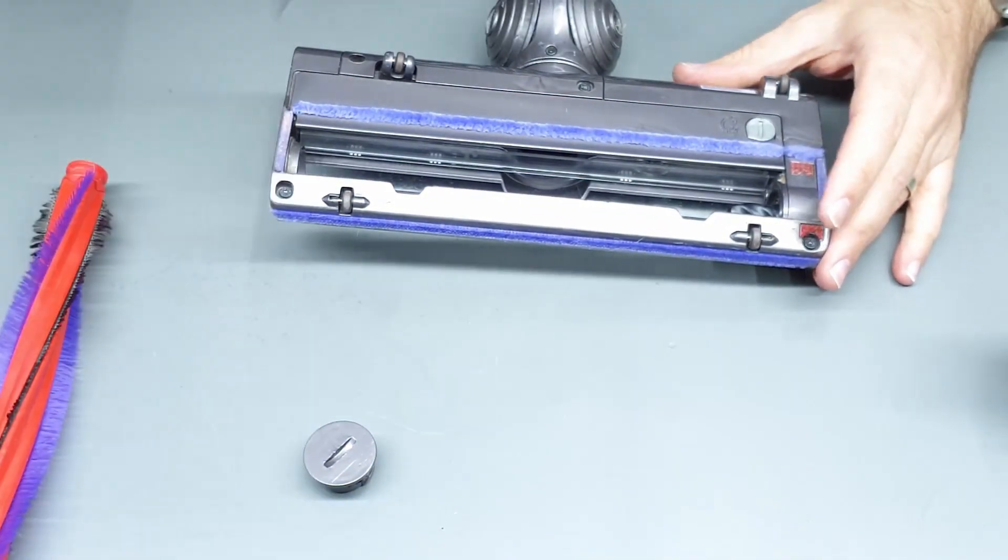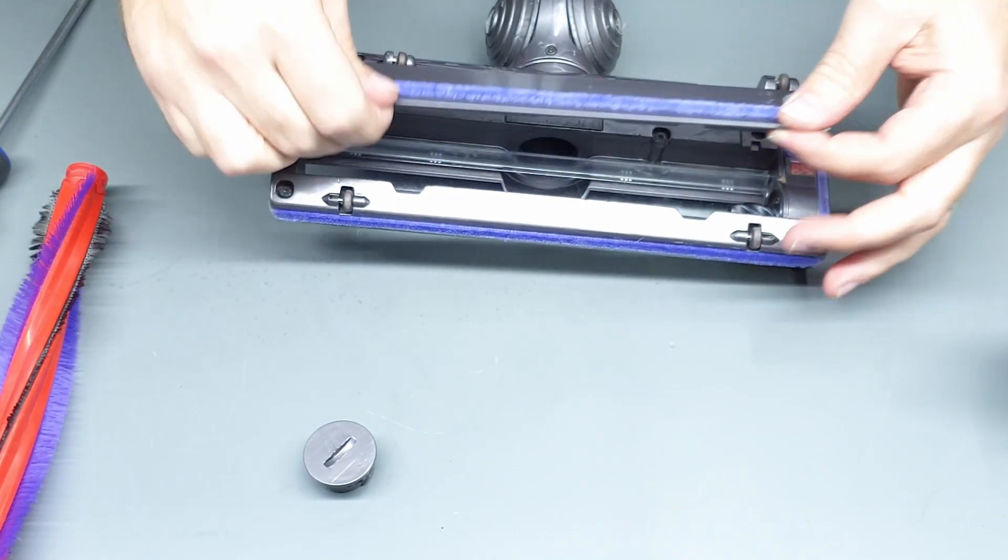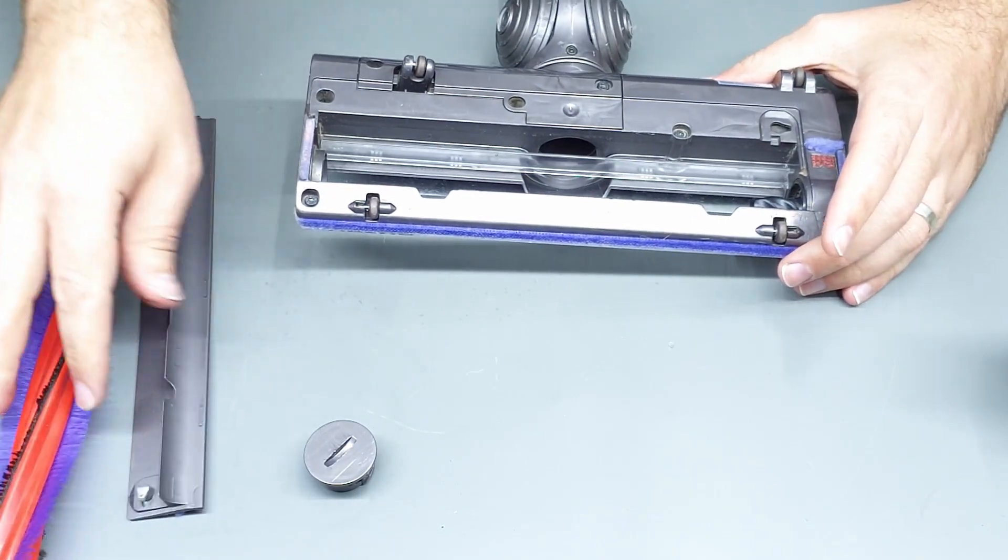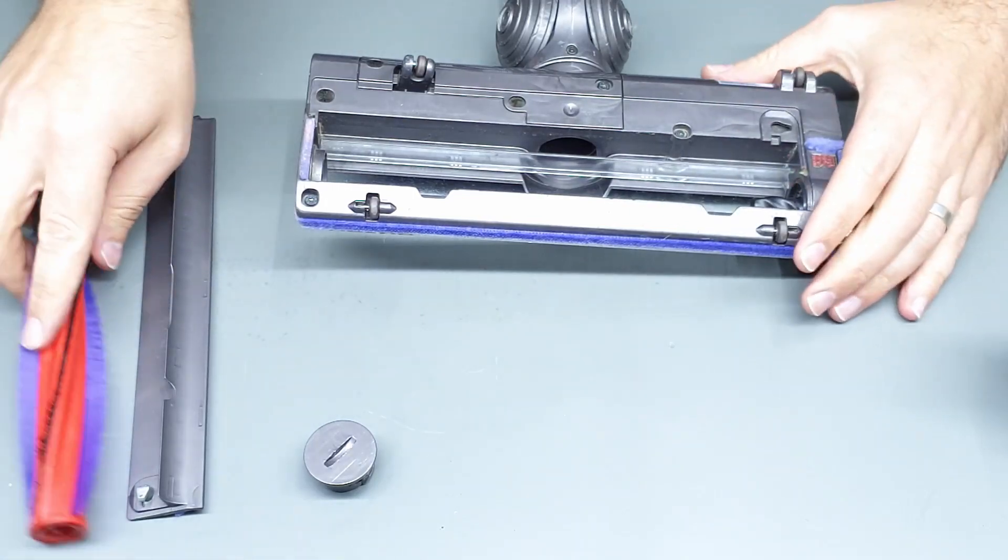The other part we can remove is back here, once again twist that tab open, that'll lift up. Now that's the easy part and you can clean them down and obviously get any hair or fluff out of these kind of things.